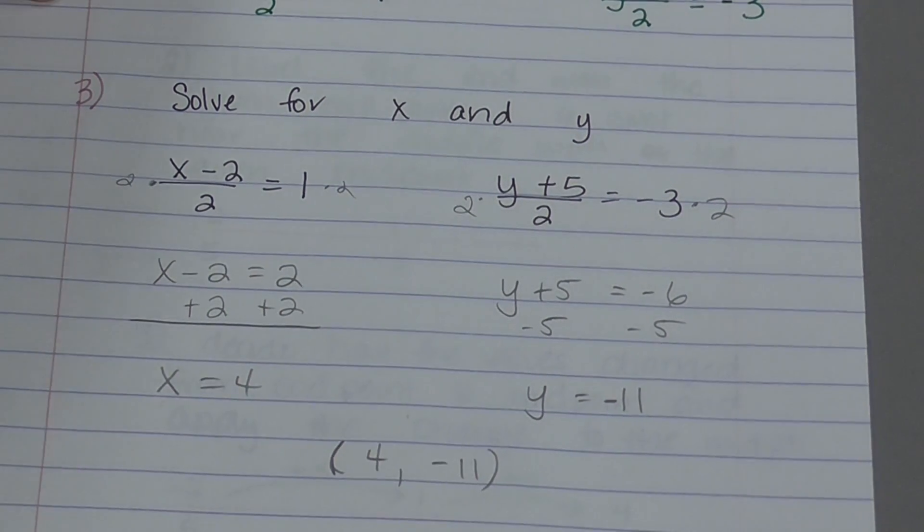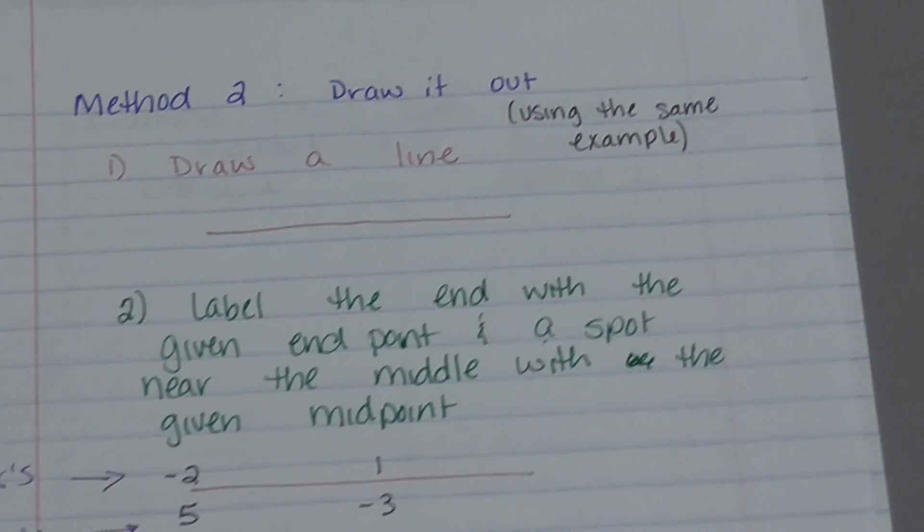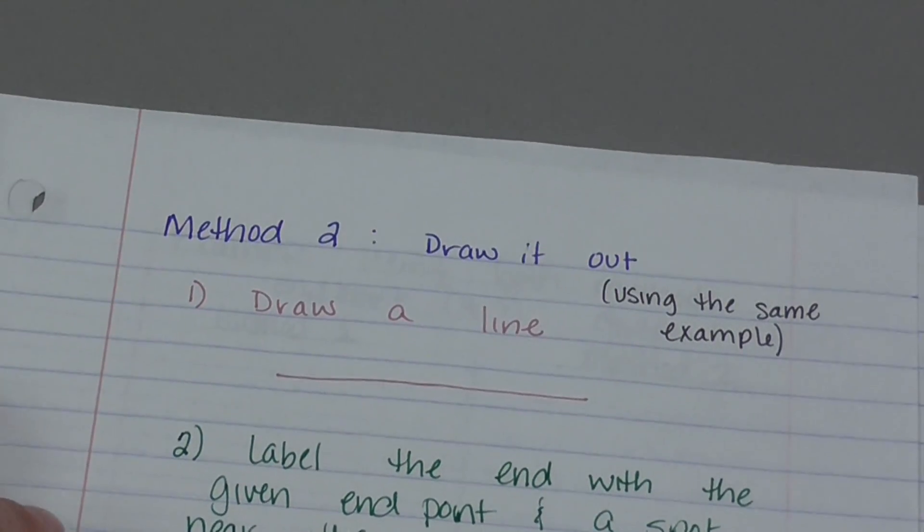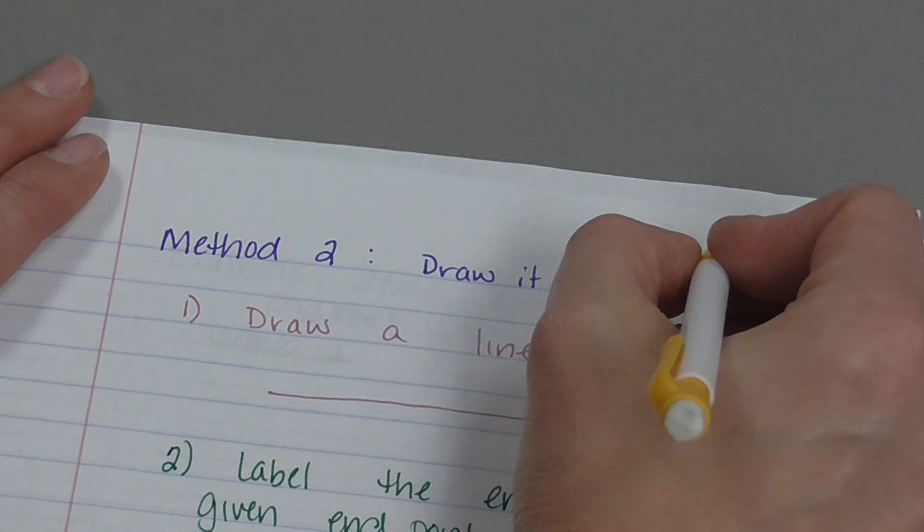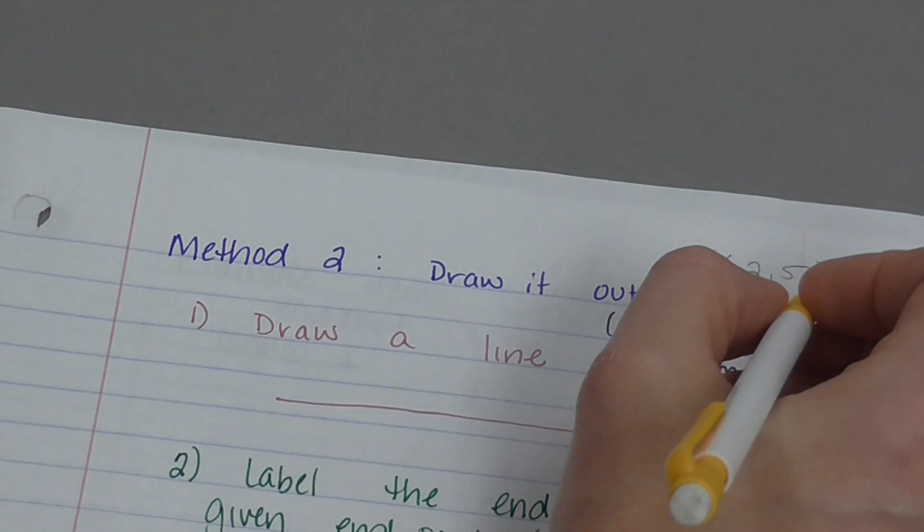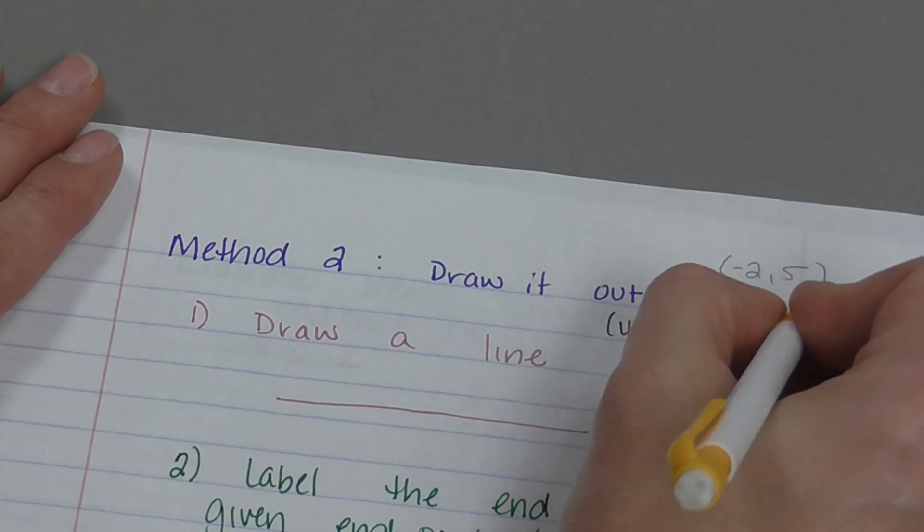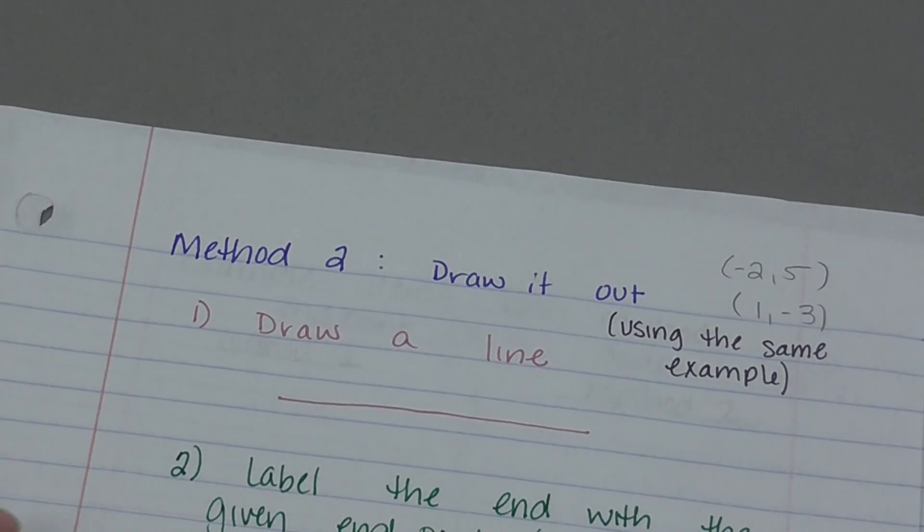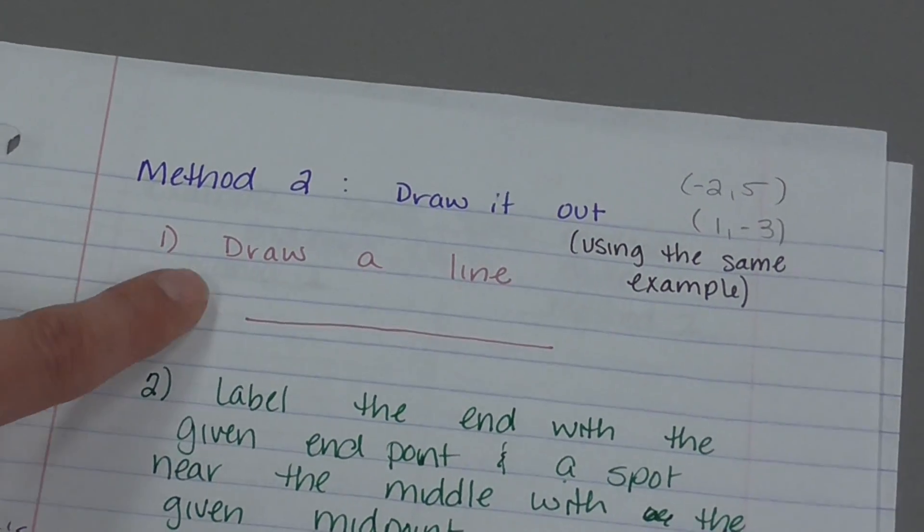So that was one method to do it. You actually used the midpoint formula. The other method is a little more visual. So we're going to use the exact same example. So my endpoint was negative 2, 5. And my endpoint was 1, negative 3. So the very first thing that we're going to do is draw a line. That's step 1.